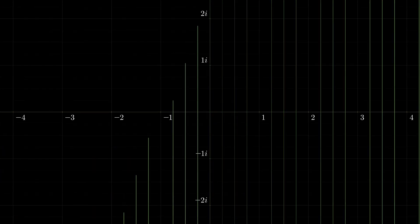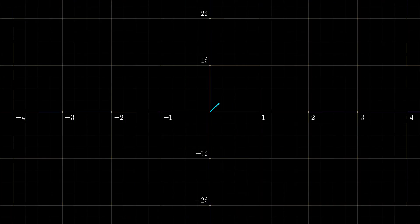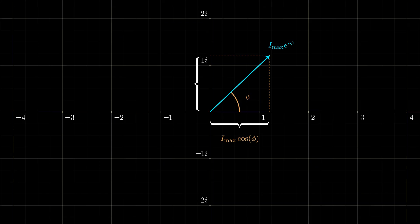Let's take it to the complex plane now. The first complex number is i_max exponential i phi of angle phi and magnitude i_max. The real part is i_max cosine phi and the imaginary part is i_max sine phi.